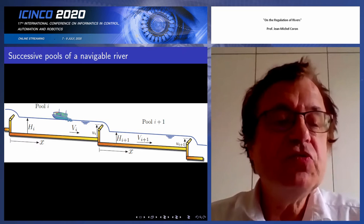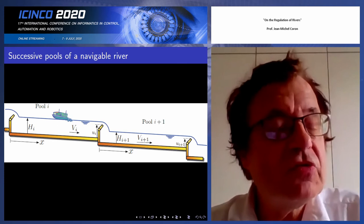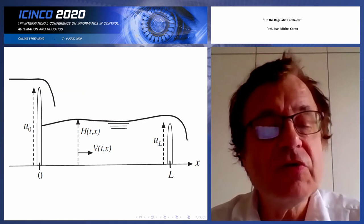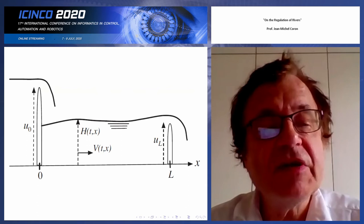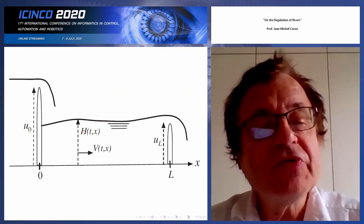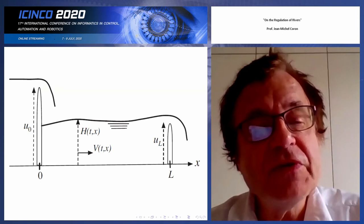We are going to use the Saint-Venant equations. In this model we denote by h(t, x) the height of the water at time t and position x. We also assume that points on the same vertical have almost the same horizontal velocity, which is denoted by v(t, x).